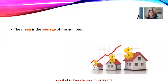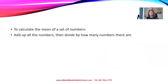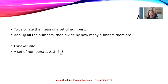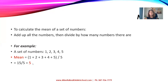Now let's take a look at mean. The mean is the average of the numbers. We are going to take an average of a set of data values. To calculate the mean, we add up all the numbers and then divide by the total number of data values. For example, with numbers 1, 2, 3, 4, 5, we add them together to get 15, then divide by 5, giving us a mean of 3.